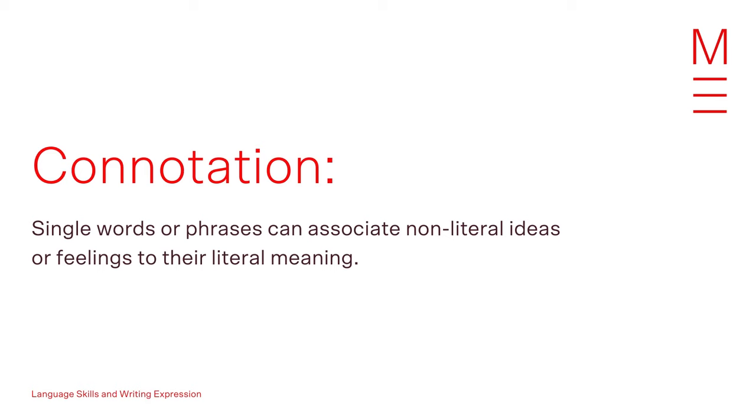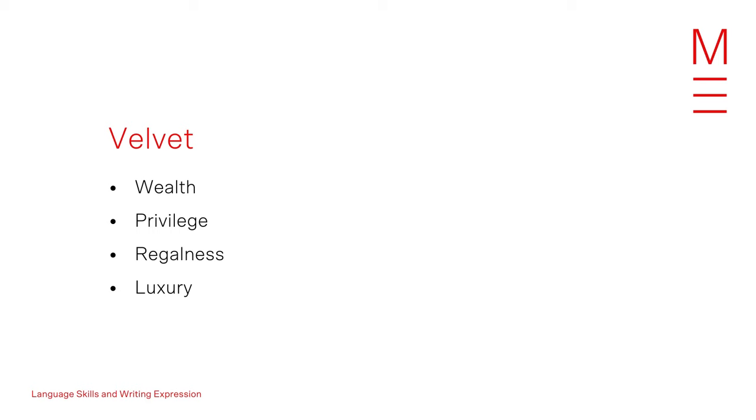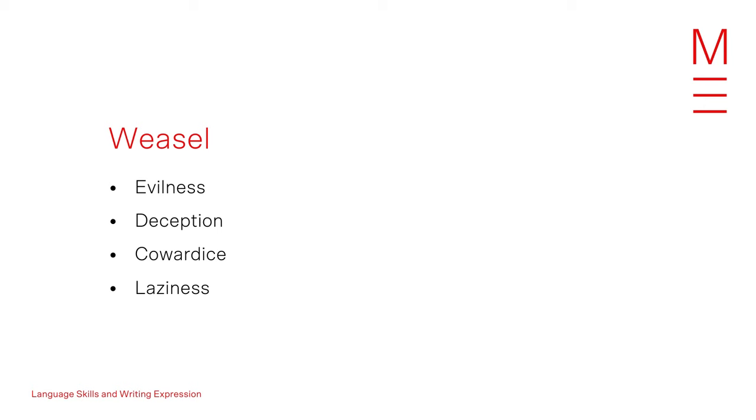Connotation refers to how single words or phrases can associate non-literal ideas or feelings to their literal meaning. For example, the word 'velvet' — apart from describing a color and a soft type of woven fabric — has connotations of wealth, privilege, regalness and luxury. For an example of a negative connotation, the word 'weasel' — while describing a rather cute animal — has connotations of evilness, deception, cowardice and even laziness.